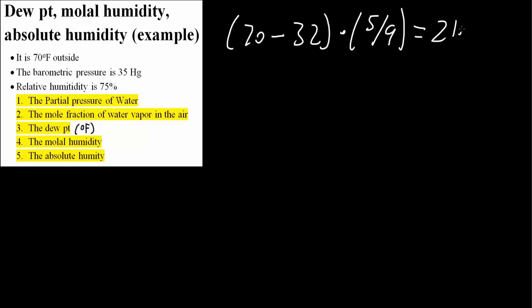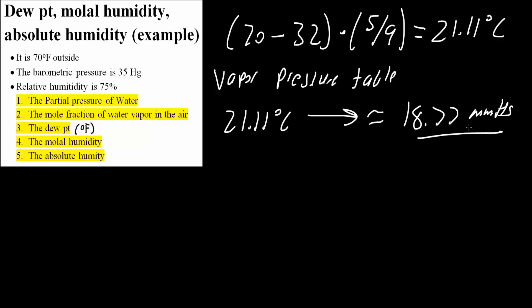Now using a vapor pressure table, 21.11 degrees Celsius corresponds to approximately 18.77 mm Hg. This information you would get from a table, or you would be given that 21.11 degrees Celsius corresponds to 18.77 mg Hg.